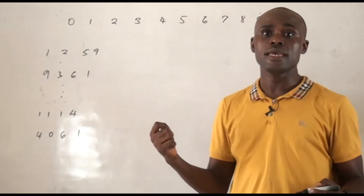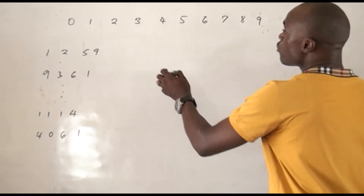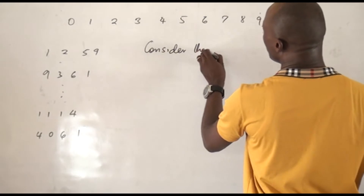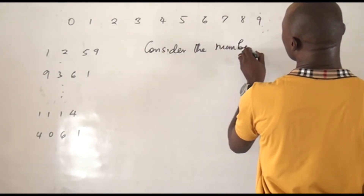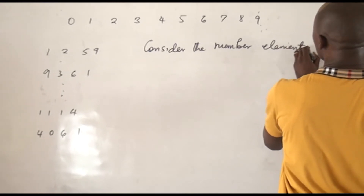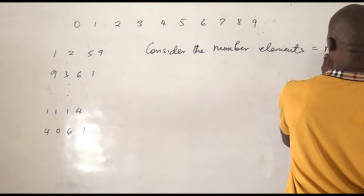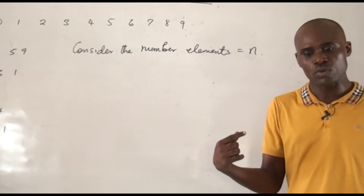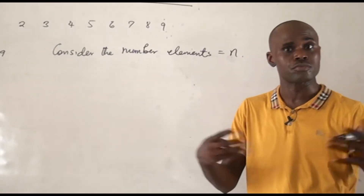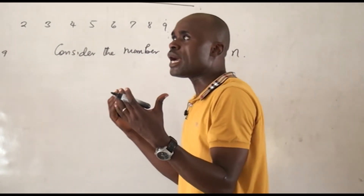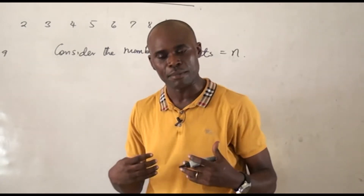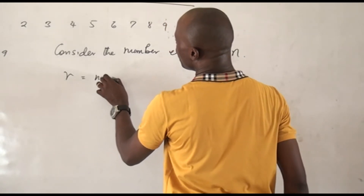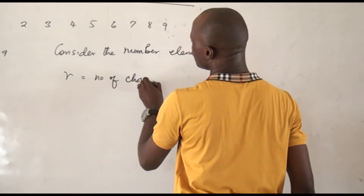The first thing you must consider is the number of elements you have — the number of choices you have to make. We call this N. So when we are dealing with permutation or combination, we use N to represent the number of elements we have to select from or arrange. Then we say, how are we picking these numbers? Are we picking 4 at a time, 2 at a time, 1 at a time? So R is the number of chosen objects.